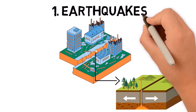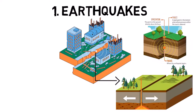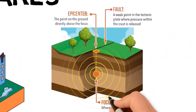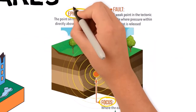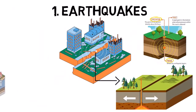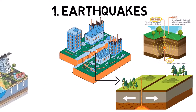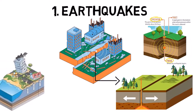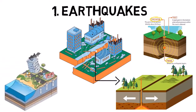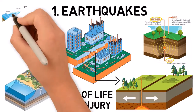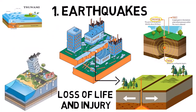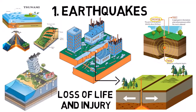The point within the Earth where the earthquake starts is called the focus, and the point directly above it on the Earth's surface is the epicenter. Earthquakes can cause severe damage to buildings, roads, and infrastructure, leading to loss of life and injury. In some cases, earthquakes can trigger tsunamis, landslides, or volcanic activity.